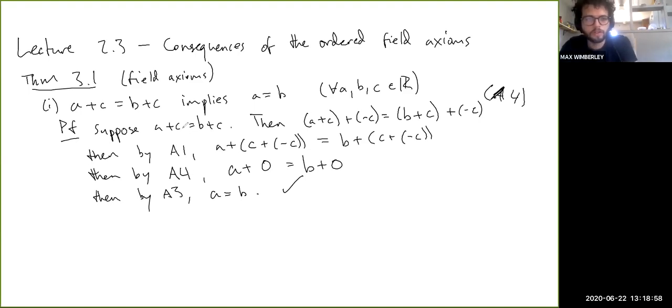Now just take stock of what happened here. We started with the assumption here and then we derived the conclusion. And each step of the way, we only ever used like one axiom basically, right? So absolutely nothing was left to the imagination here. This is sort of the ultimate level of rigor that you could possibly ask for in a proof. It's just completely laid out. Everything is justified in terms of the axioms.